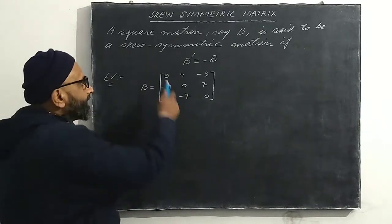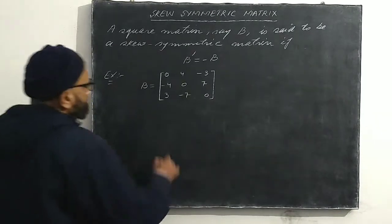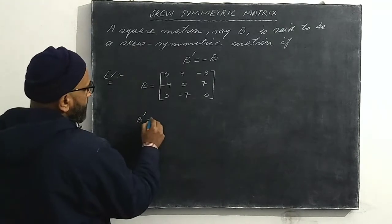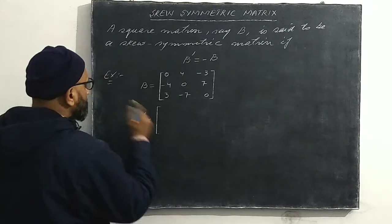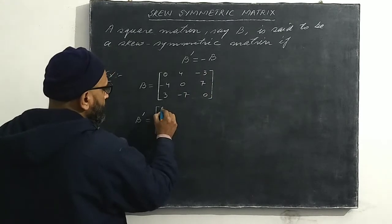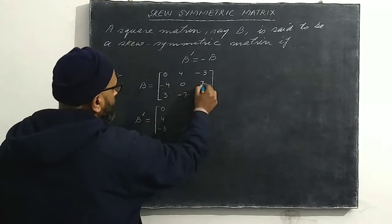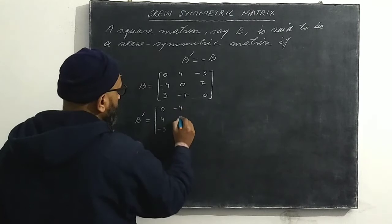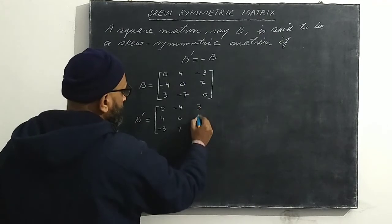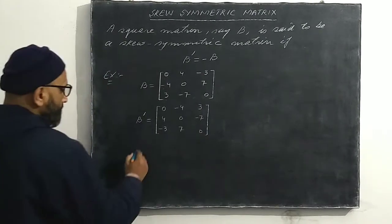One point must be noted: in a skew symmetric matrix the diagonal elements are always zero. To verify, we take the transpose of B. Interchanging rows and columns, the first row becomes the first column: zero, four, minus three; the second row becomes the second column: minus four, zero, seven; and the third row becomes the third column: three, minus seven, zero.